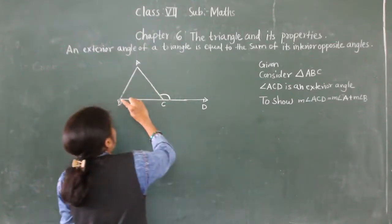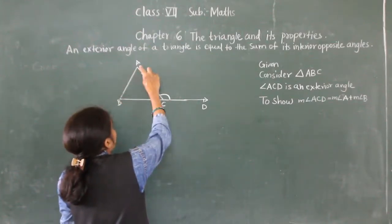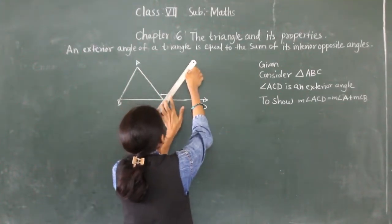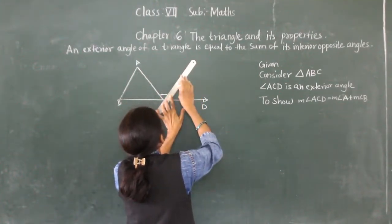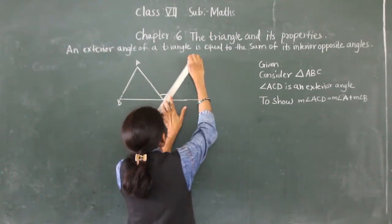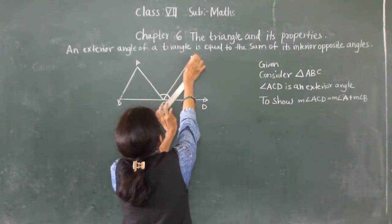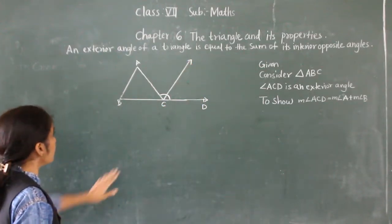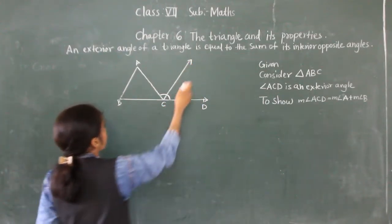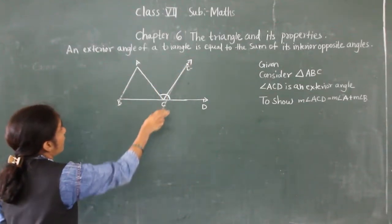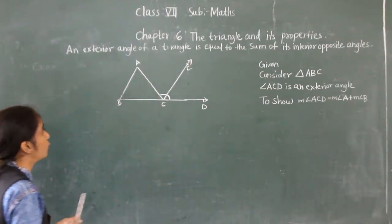So I will draw from C one line CE, parallel to BA. This is the parallel line CE, parallel to BA.